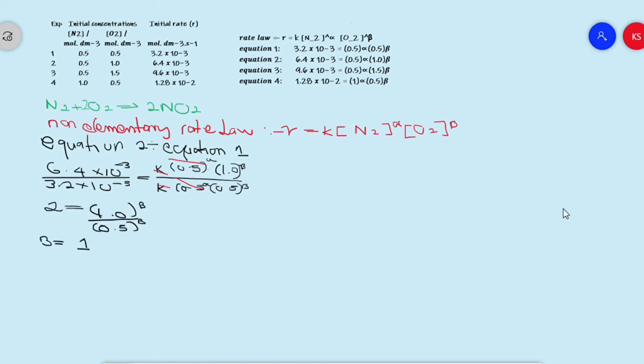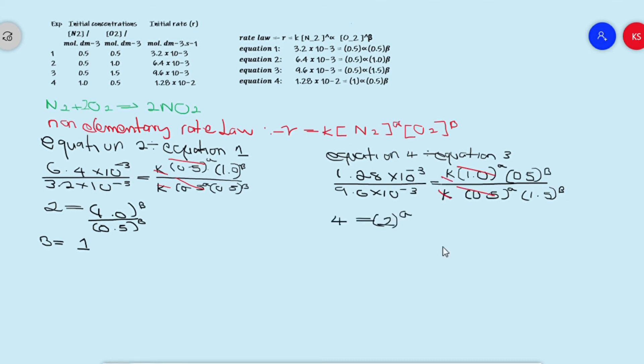Now let's calculate for our alpha. To calculate for my alpha, I'm going to divide equation four by three. This and this will cancel out, my k's will cancel out, and I'll be left with. Using exponent laws, I can raise four to power two, equating it to alpha. My denominators are the same, therefore my alpha equals to two.